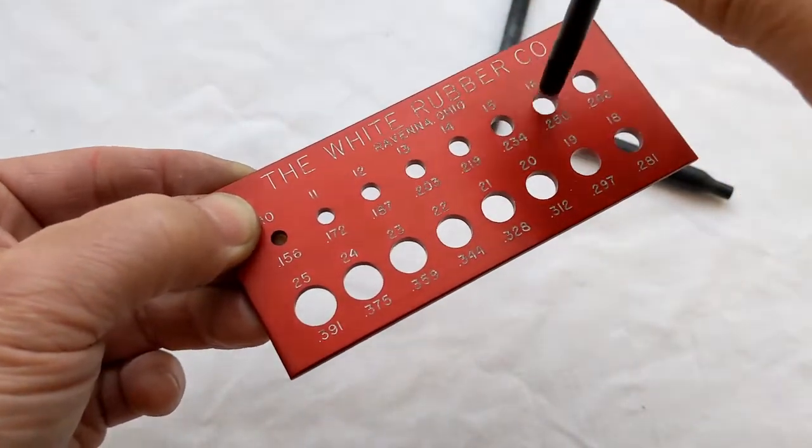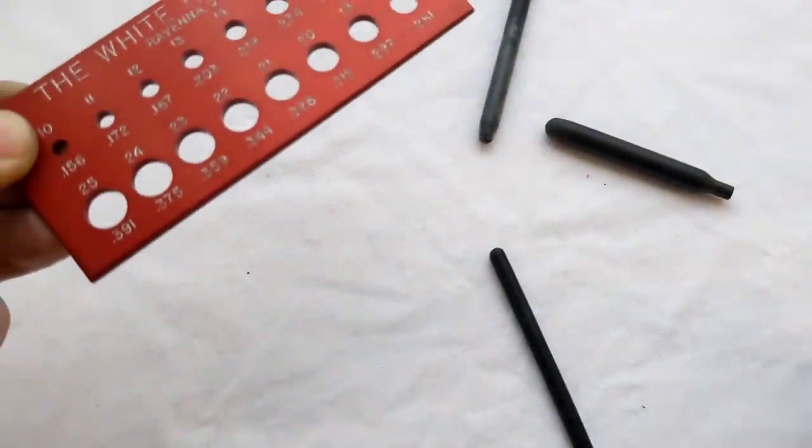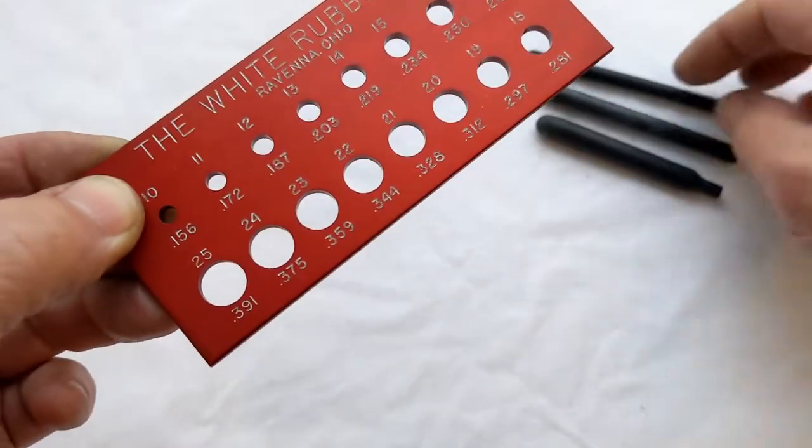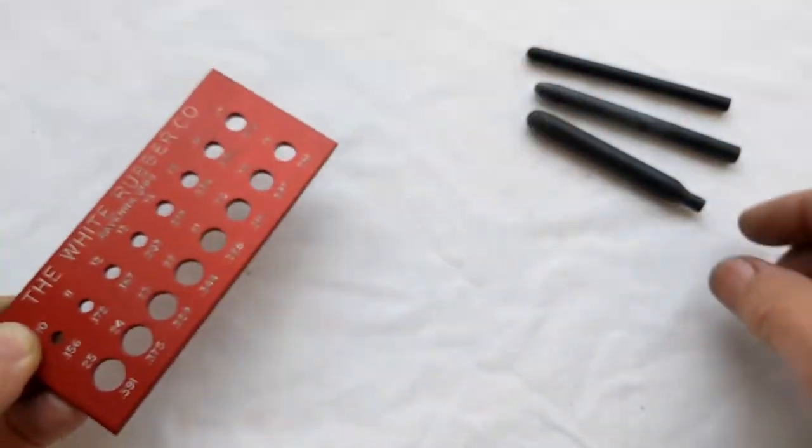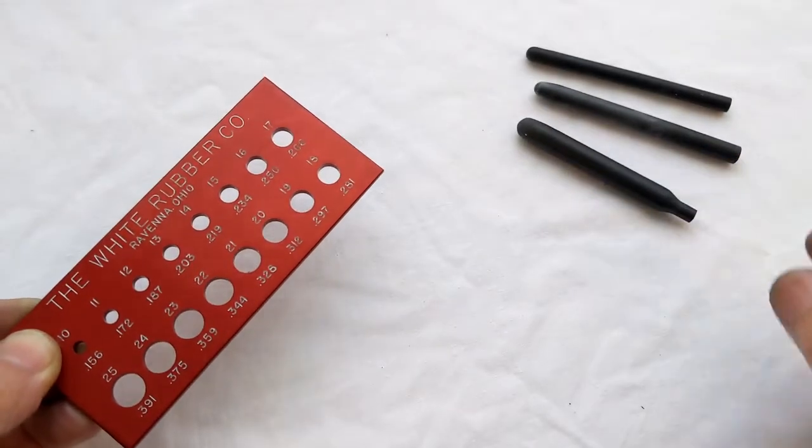We'll do the same here. This one is a 16. So we have a 16, a 19, and a 24. The 24 being necked, which we'll discuss later.